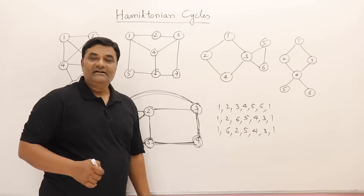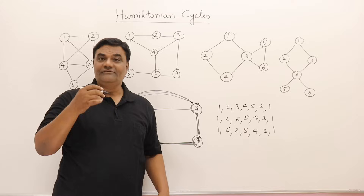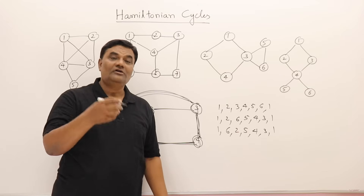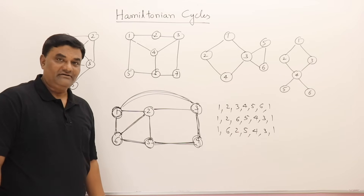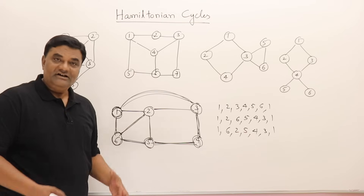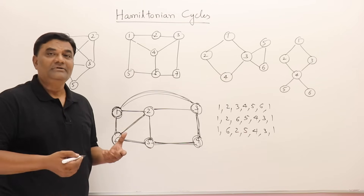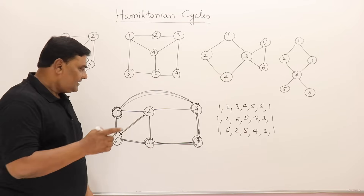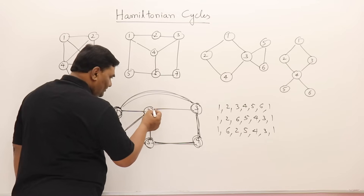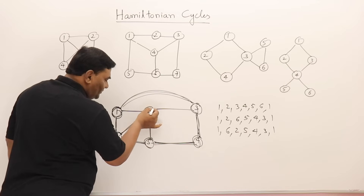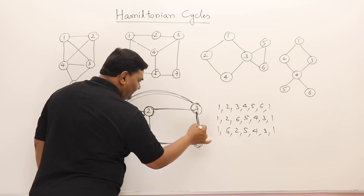The problem is we want to find out all possible Hamiltonian cycles in a graph — if they are possible or not, and if possible then how many. We want all of them.